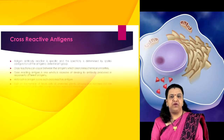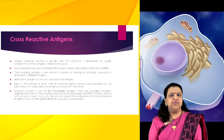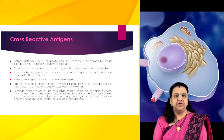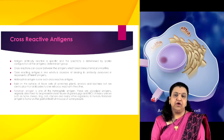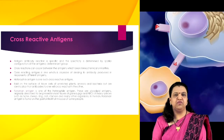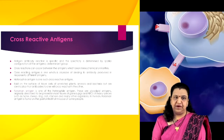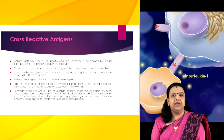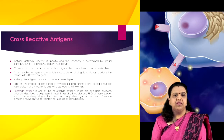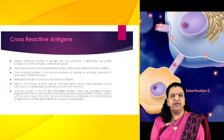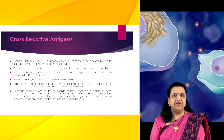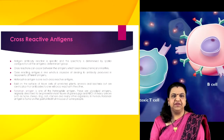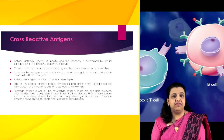There are many types of antigens. Cross-reactive antigen is one of them. Antigen-antibody reaction is specific and the specificity is determined by the spatial configuration of the antigenic determinant groups, but antigen specificity is not absolute. Cross-reactions can occur between antigens which bear stereochemical similarities. A cross-reacting antigen is one which is capable of binding to an antibody produced in response to a different antigen. This is due to the sharing of determinants by the two antigens, or because the antigenic determinants, although non-identical, are closely enough related stereochemically to combine with antibodies against either one.